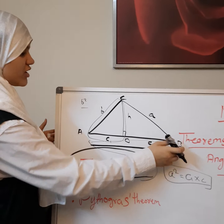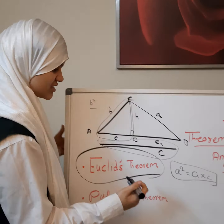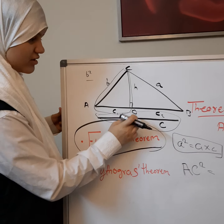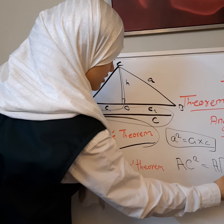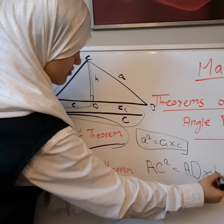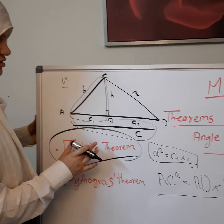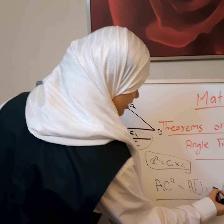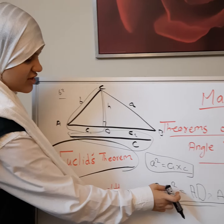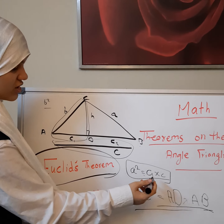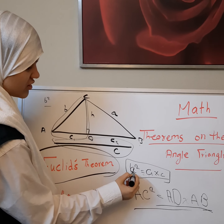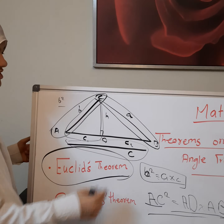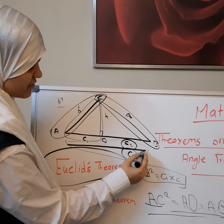For side b: b squared equals c1 times c (capital). For side a: a squared equals c2 times c. In another form using segment notation, a squared equals AD times AB, and we can also write a squared equals c2 times c capital — where c2 is the hypotenuse segment adjacent to side a.